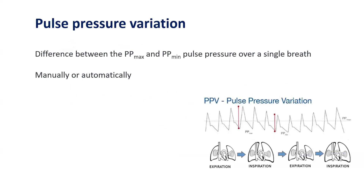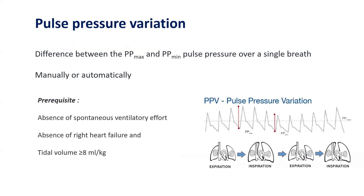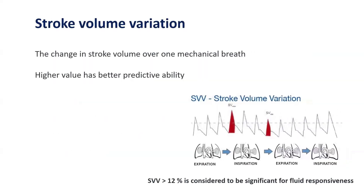Pulse pressure variation is given by the difference between maximum and minimum pulse pressure over a single breath. It can be measured manually or automatically. Best values are obtained in the absence of spontaneous ventilatory effort, absence of right heart failure, and when minimum tidal volume delivered is more than 8 ml per kg. A pulse pressure variation of more than 12% is a significant predictor for fluid responsiveness. Similarly, stroke volume variation — the change in stroke volume over one mechanical breath — has also been shown to be a significant predictor for fluid responsiveness.